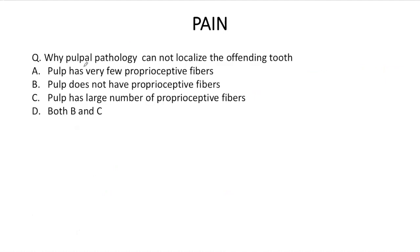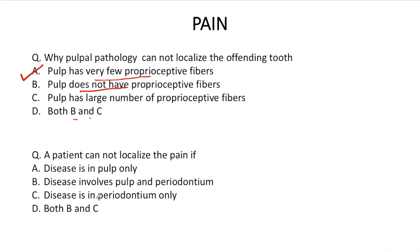This question came in late 2017: why can pulpal pathology not localize the offending tooth? The options were: A) pulp has very few proprioceptive fibers, B) pulp doesn't have proprioceptive fibers, C) pulp has a large number of proprioceptive fibers, and D) both B and C. As we just discussed, the pulp has very few proprioceptive fibers and so it's not able to localize the offending tooth. Therefore, option A is the correct answer. I hope that's clear now.